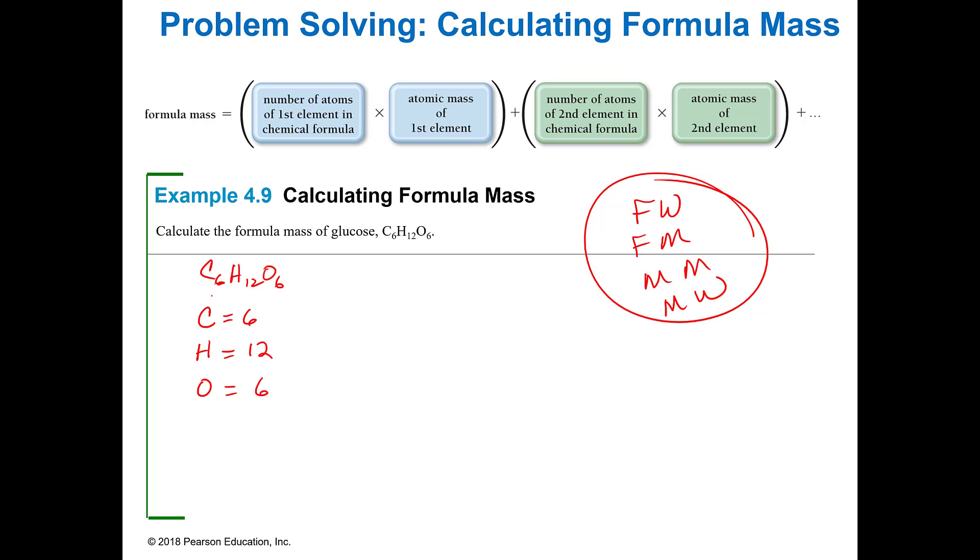So I have six carbons, I have 12 hydrogens, and I have six oxygens. So I now know how many of each thing I have, so I'm going to multiply that by the atomic mass. Now, if you want to use all of the decimal places, you can. Usually, just to save time, I just use the rounded ones. So six times 12 is going to give us the grams of carbon. Twelve times one is going to give us the grams of hydrogen. And six times 16 is going to give us the grams of oxygen. So six times 12 is 72, and 12 times 1 is 12, and 16 times 6 is 96.